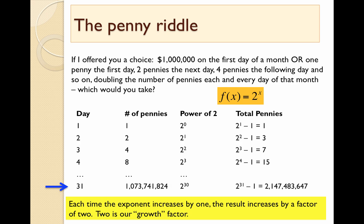Every time we increase the exponent by one, our result increases by a factor of two. So two is what we call our growth factor. So how many dollars is that by the way? See if you can figure that out.